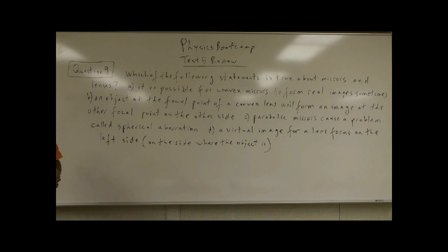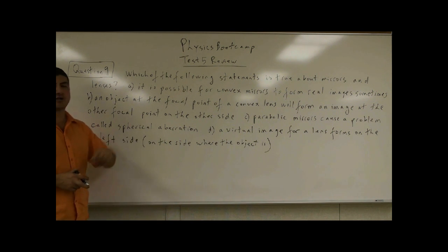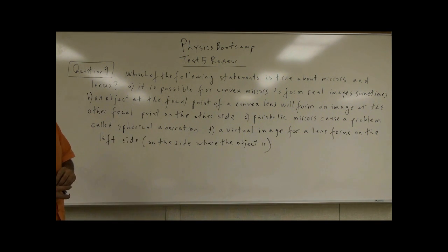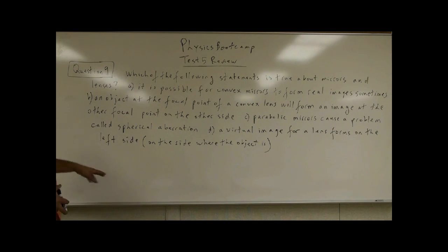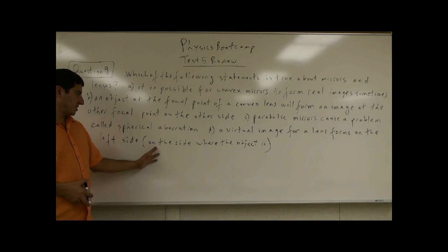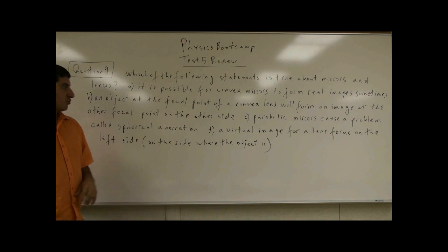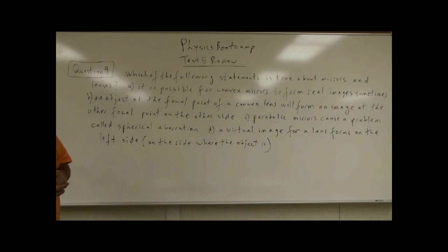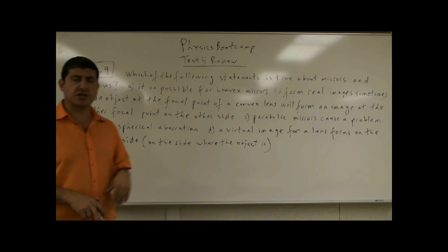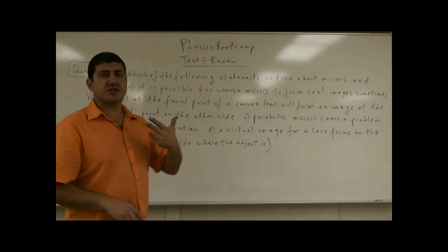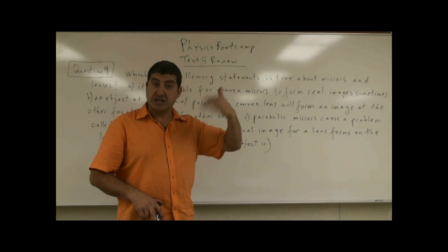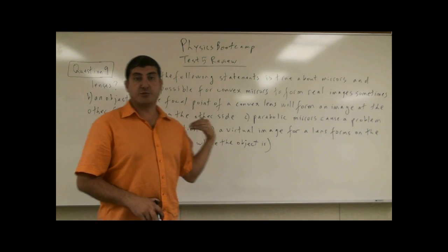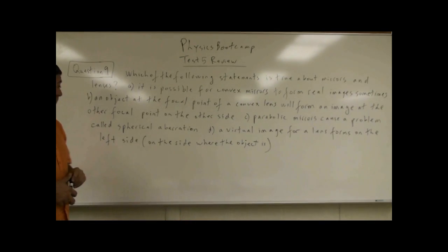C: Parabolic mirrors cause a problem called spherical aberration. D: A virtual image for a lens forms on the left side, which is, by definition, on the side where the object is. So, do virtual images form on the side where the object is? Let's go through these — some of which we began to answer in our explanations of the previous question, question 8.